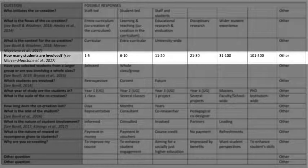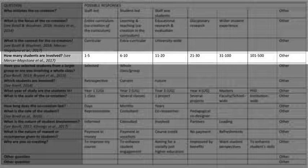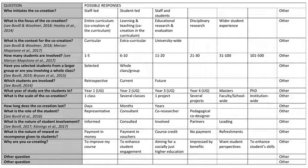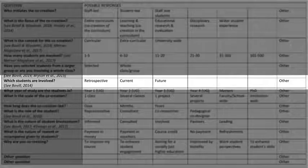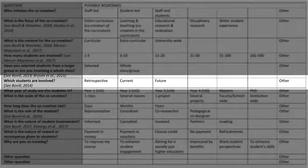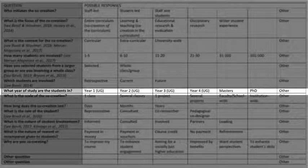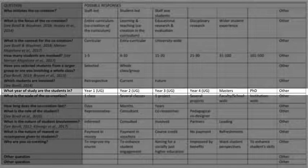How many students were involved? There were seven students, which I think was a good number for this type of project. Did you select students from a large group or involve a whole class? The opportunity was open to the whole institution, however we accepted everyone who applied. Which students were involved? They were all current university students — all undergraduates ranging from years one to three.